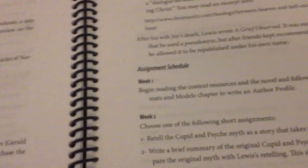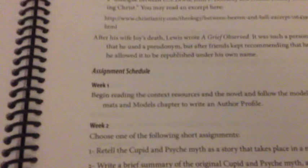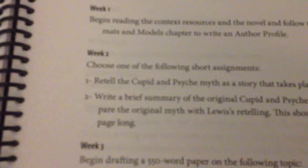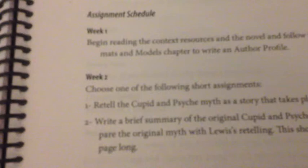In this particular unit, the two assignment options are: first, to retell the Cupid and Psyche myth as a story set in a modern setting — a more creative assignment; or second, to write a brief summary of the original Cupid and Psyche myth and briefly compare it with Lewis's retelling. This should be no more than one page long. Like Charlotte Mason, I believe that short lessons are usually better. When you require an overly long piece of writing from a student who doesn't have a lot to say, you end up with filler and fluff. I would rather see deep thought distilled into shorter space.